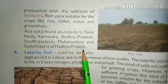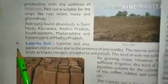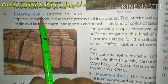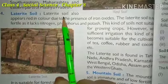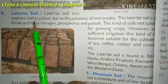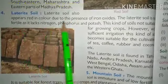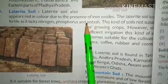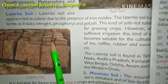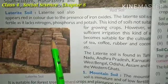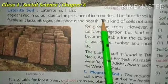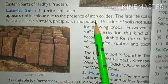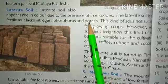Now we come to the fourth type of soil, that is laterite soil. Laterite soil also appears red in color due to the presence of iron oxides. This laterite soil is also red in color because it has iron oxides mixed in it, and that is why it appears red.